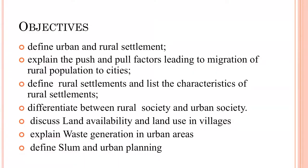Today's objectives of this program are: define urban and rural settlement; explain the push and pull factors leading to migration of rural population to cities; define rural settlement and list the characteristics of rural settlement; differentiate between rural society and urban society; discuss land availability and land use in villages; explain waste generation in urban areas; and define slum and urban planning.